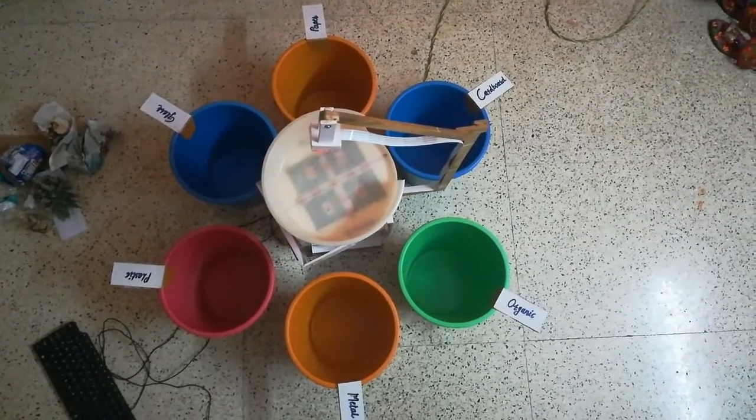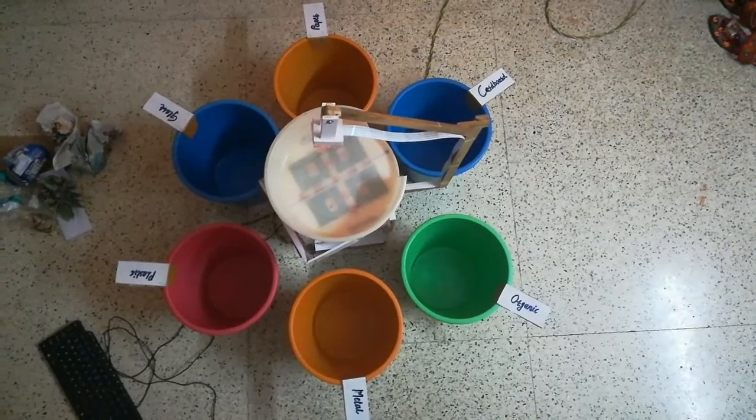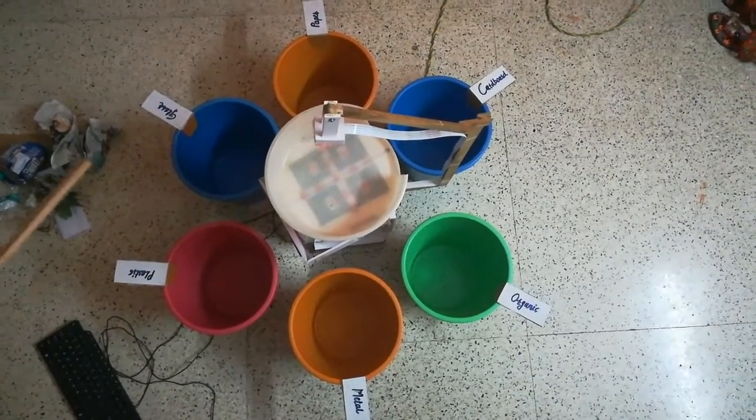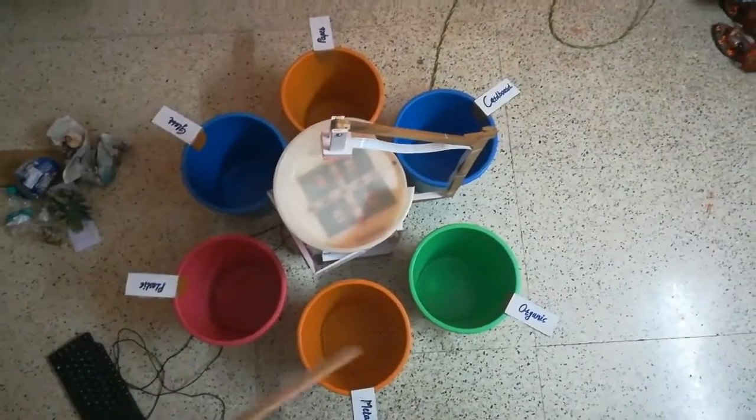This system segregates the garbage into six classes. If we keep any type of garbage into the trash tray, it will drop into the respective bin.